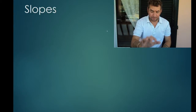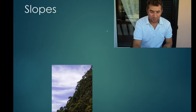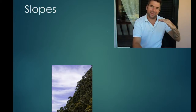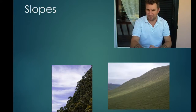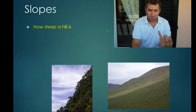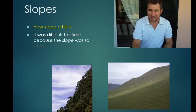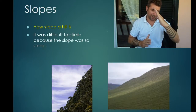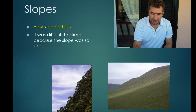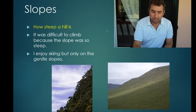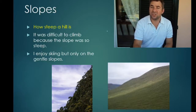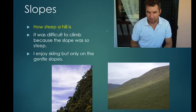Slopes. There are two types of slope really. There are steep slopes, which would be very difficult to climb and also extremely tiring. And then more gentle slopes, which are not as steep and much easier to climb. So it's about how steep a hill is. You have a steep slope or a gentle slope. It was difficult to climb because the slope was so steep. Or: I enjoy skiing but only on gentle slopes — obviously you don't want to go too fast.